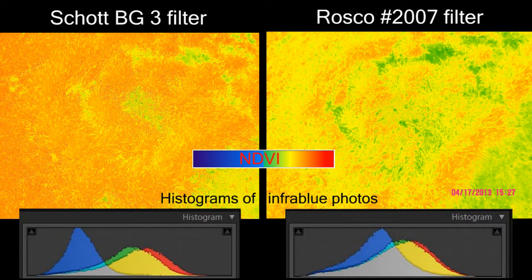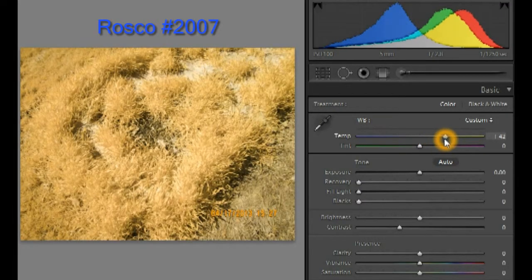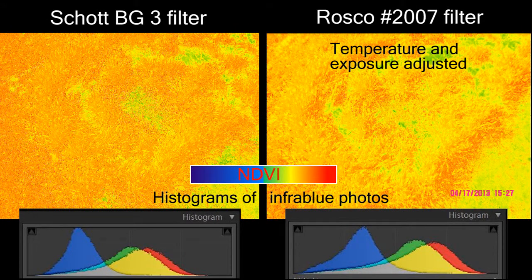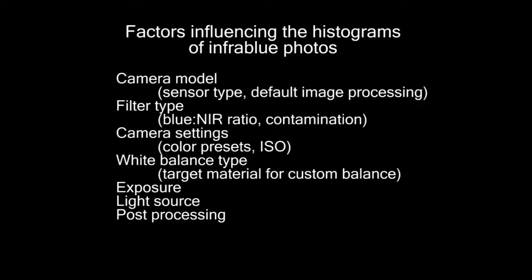The greater separation of the red and blue channels in the shot image translates to higher NDVI values, with colors more toward the red end. We can adjust the temperature and exposure of the Roscoe image so that the histograms more closely resemble the shot image, and the NDVI values become more similar. The point is that the form of the infra-blue image histogram directly affects the resulting NDVI values, and it's important to be aware of how our actions alter that histogram.